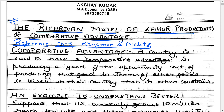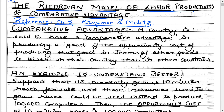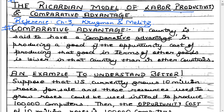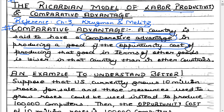In this particular lecture, we intend to look at a very important concept called comparative advantage. A country is said to have a comparative advantage in producing a good if the opportunity cost of producing that good in terms of some other good is lower in that country than in other countries.